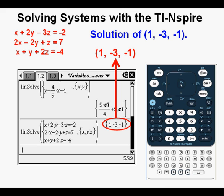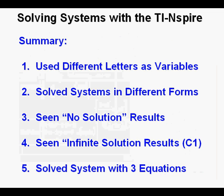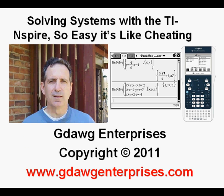In this lesson, we have done five system of equation problems with the TI Nspire. We've solved systems of equations in different forms. We've used different letters as variables, seen what no solutions looks like, what infinite solutions looks like, and that's when we see a C1. And then we solved a system with three equations and three unknowns. This has been Solving Systems with the TI Nspire Calculator. So easy it's like cheating. Thanks for viewing.